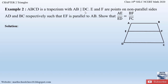E and F are points on non-parallel sides. In a trapezium we have two parallel sides and two non-parallel sides. The parallel sides are AB and DC, and the non-parallel sides are AD and BC. E and F are points on non-parallel sides AD and BC respectively, such that EF is parallel to AB. We have to prove that AE by ED is equal to BF by FC.